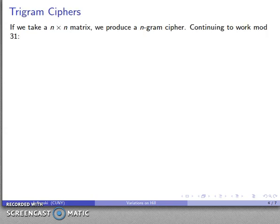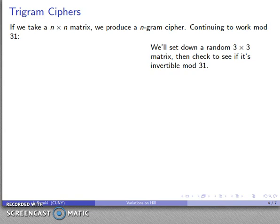What can I do next? Well, I can use the Hill cipher as it was intended to be used, which is as a trigram cipher, or as a multigram cipher. If I take an n by n matrix, I'm going to produce an n-gram cipher. So again, if I want to continue to work mod 31, what I'll do is set down a random 3 by 3 matrix.